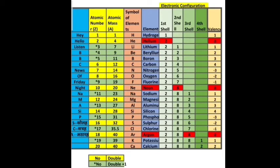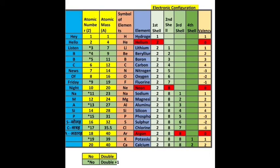There are two exceptions: atomic number 17, chlorine, has an atomic mass of 35.5 instead of 35. Atomic number 18, argon, has an atomic mass of 40 instead of 36. You have to remember these. Now we will look at electronic configuration.